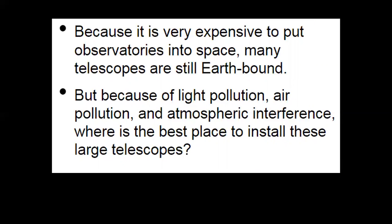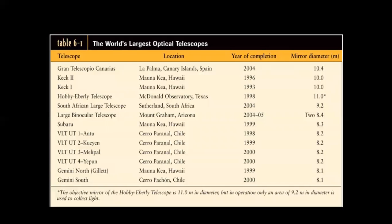Because it is very expensive to put observatories into space, many telescopes are still ground-bounded, but we can use the guide star technique to overcome turbulence. Light pollution, air pollution, and atmospheric interference make space the best place for large telescopes. Here is a list of the world's largest optical telescopes: the Gran Telescopio Canarias in Spain is the largest, then the Keck telescopes in Hawaii, then the third in Texas. Mirror diameters range from 10.4 meters down to 8 meters, with smaller ones as well.